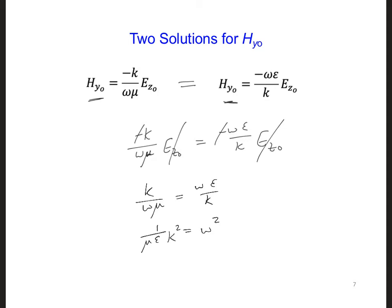At this point, we might as well take the square root of the entire equation, both sides. Then we wind up with an equation for omega. Omega is the square root of 1 over mu epsilon times K.